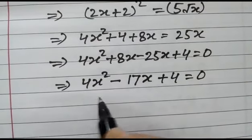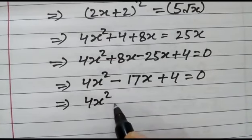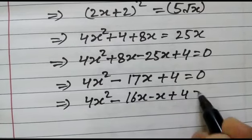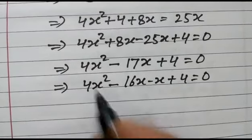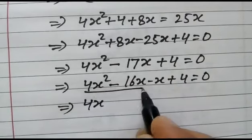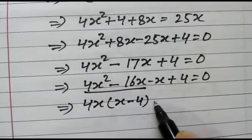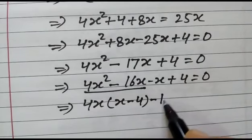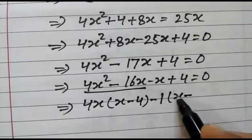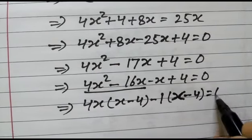If we factorize this, as 4x square minus 16x minus x plus 4 is equal to 0. If we take 4x as common, we get x minus 4 and here we will take 1 as common, minus 1 as common, we get x minus 4 is equal to 0.